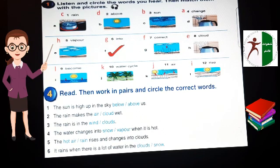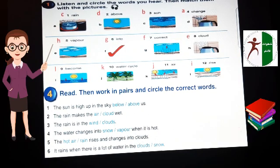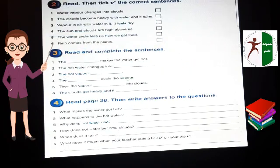Next activity. Read and work in pairs and circle the correct words. Number one. The sun is high up in the sky above us. The rain makes the air wet. The rain is in the clouds. The water changes into vapor when it is hot. The hot air rises and it changes into clouds. It rains when there is a lot of water in the clouds. These questions from the lesson.